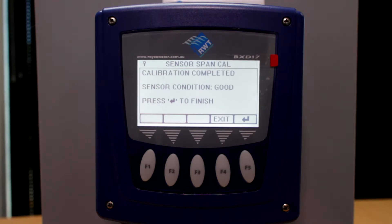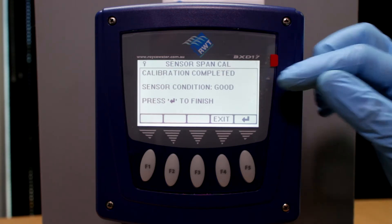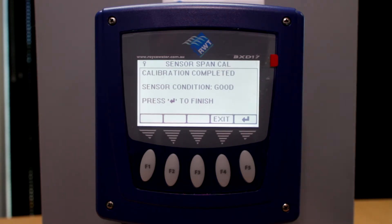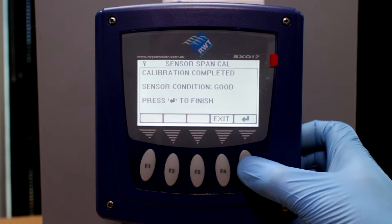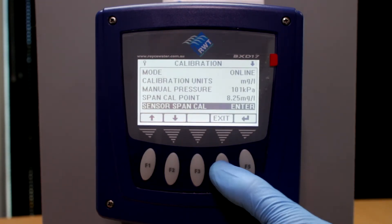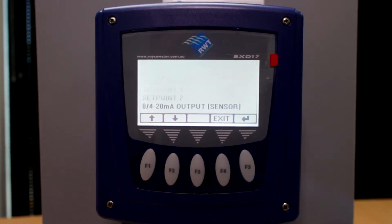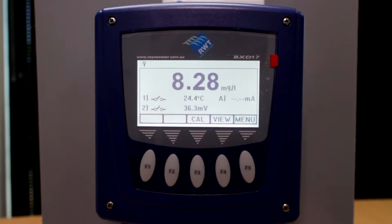Once calibration is complete, the BXD will tell you the calibration has been completed and give you a report on the sensor condition. Push enter to complete, F4 exit, and F4 again, and you're back to your readout.